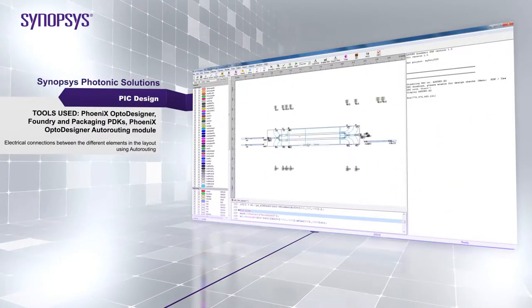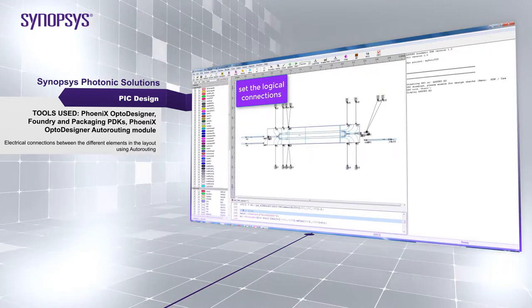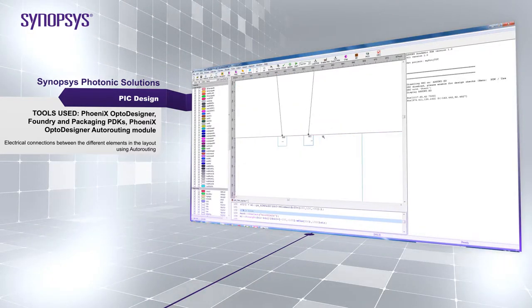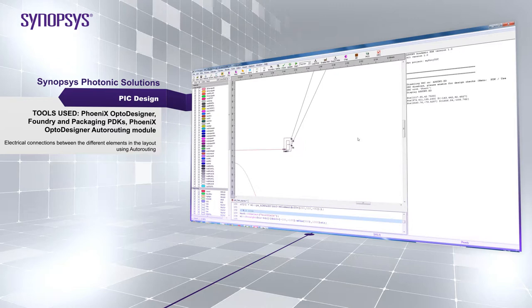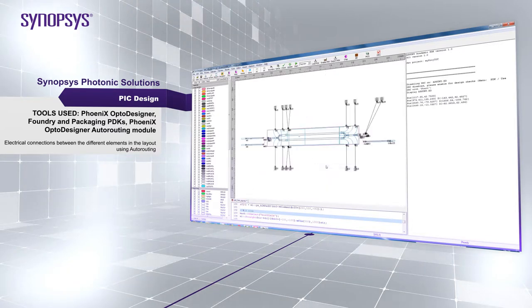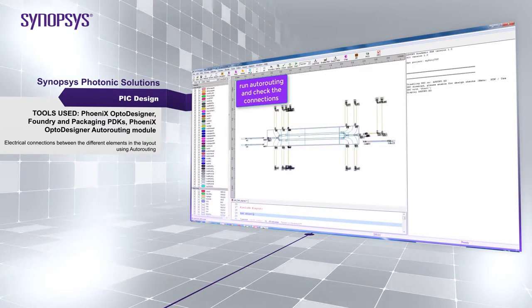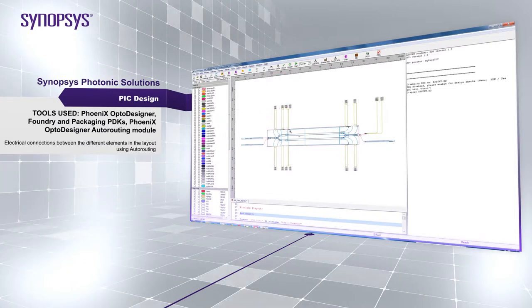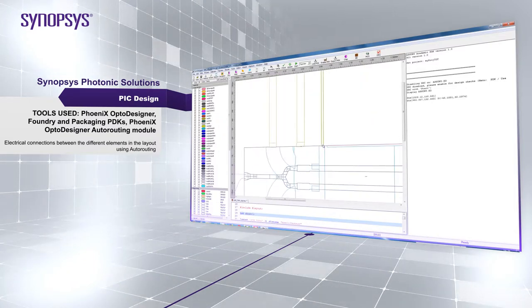Once the DC pads are added into the design layout, you can use OptoDesigner Auto Routing module to complete your layout. The auto routing functionality works for both electrical and optical connections. You can use the functionality to complete the connections between the electrical ports of the MZM and the DC pads.